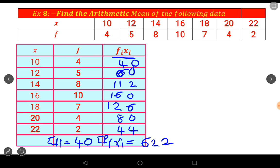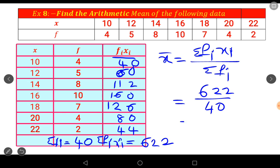Sigma f_i is equal to 40. Next, x̄ is equal to sigma f_i x_i by sigma f_i. This is the formula. So x̄ equals sigma f_i x_i which is 622 from the table, divided by 40. 622 divided by 40 equals 15.55. So 15.55 is the answer.